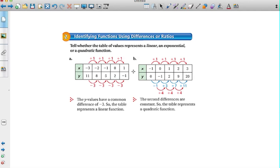Take a look at an example then. Tell whether the table of values represent a linear, exponential, or a quadratic. Well, take a look at the x's going up by a constant value. The y's are going down at a common difference. This then represents a linear function.